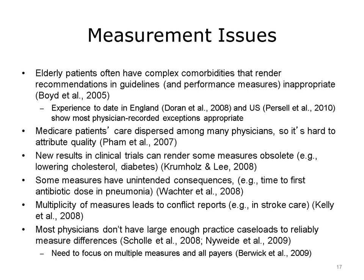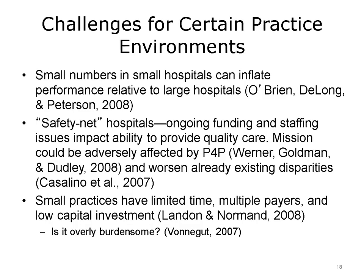Additional analysis has found that most physicians don't have large enough practice caseloads to reliably measure differences. Berwick has suggested a need to focus on multiple measures and on all players, not just Medicare or one insurer. There are also challenges for certain practice environments. Some of the measures have been configured such that small numbers of patients in smaller hospitals can inflate performance relative to large hospitals. Measures need to be adjusted for different settings. It has also been shown that safety net hospitals have ongoing issues with funding and staffing that impact their ability to provide quality care. The mission of these institutions could be adversely affected if tied into P4P, and this measure may actually worsen some of the health care disparities that these institutions are set up to address.